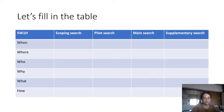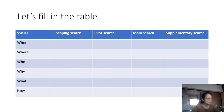Let's look at this table before going into detail about the different types of search. The 5W1H model is very popular for identifying key elements of an event. It involves when, where, who, why, what, and how. The takeaway from today's tutorial is that you will understand 5W1H — the different aspects of the four types of search in systematic literature review.